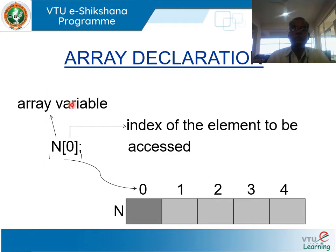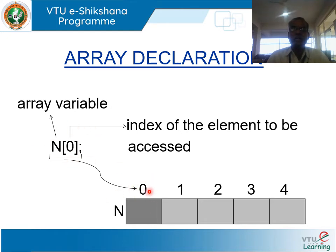This shows how to access elements in an array. For example, n[0], where n is the array variable and 0 is the index of the element to be accessed. We are accessing the first element in the array n.